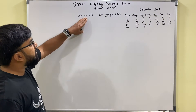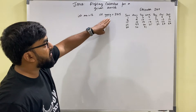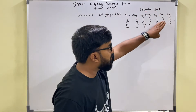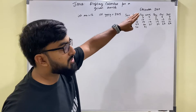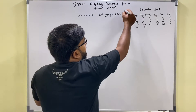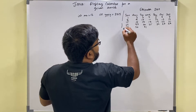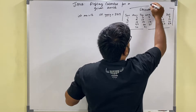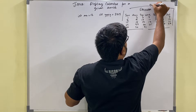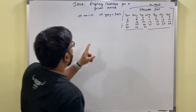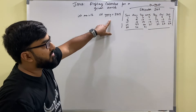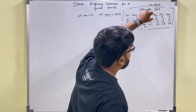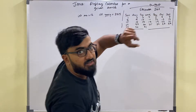Given input MM equal to 12 and YYYY equal to 2019, I need to print an output on console that looks like a calendar for this month. The output includes the name of the month, name of the year, then the name of the days, and then the calendar grid.